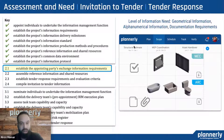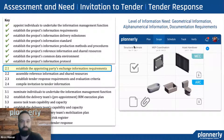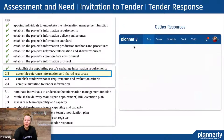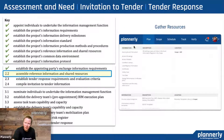What assets are we going to manage, create, and build on this given project? How should we create that, and when should we create those pieces of information during the project? Always following that level of information need — geometry, alphanumeric information, and documentation — and making it as simple and structured as possible for teams to understand.